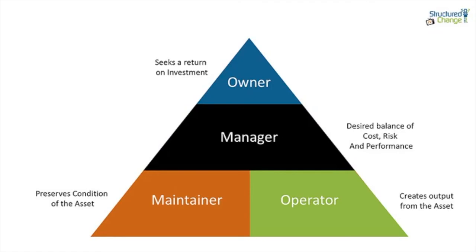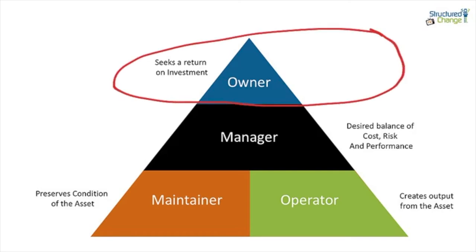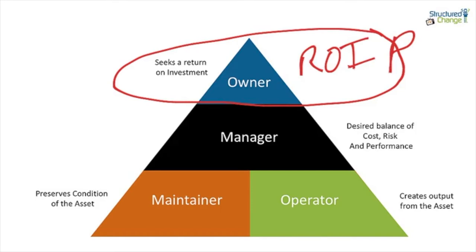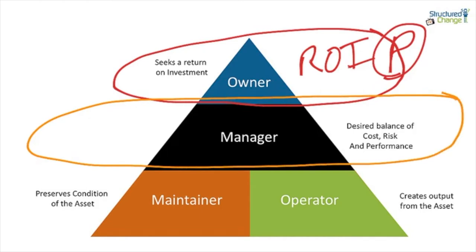Let's look at how we divide the asset up into these four main groups. At the top, you've got the owner — that could be an individual, a company, a consortium, a trust fund, or any number of entities — and they are seeking a return on investment or performance. We then move to the manager. The manager sits between the owner and the maintainer and operator, and they're very interested in balancing out cost, risk, and performance so that the asset delivers value, while being mindful of the design parameters and design life of the asset.